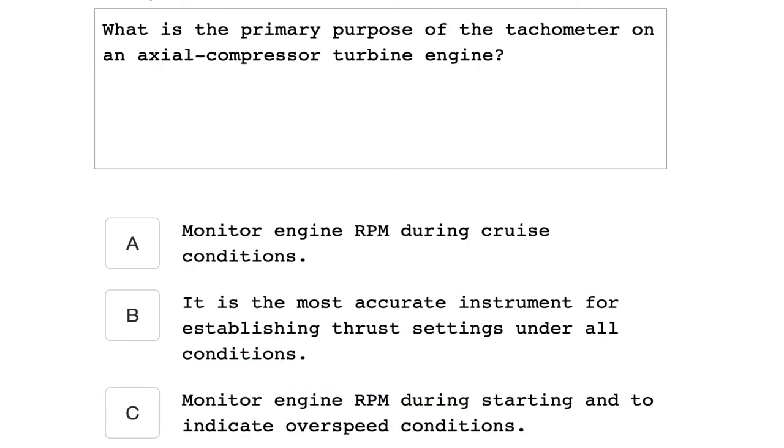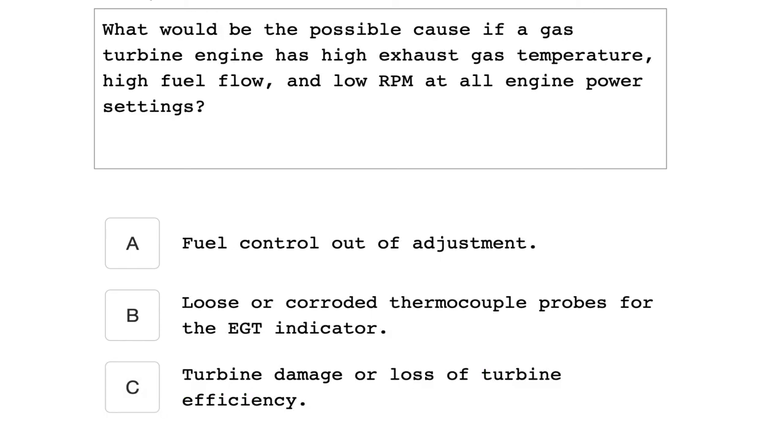What is the primary purpose of the tachometer on an axial compressor turbine engine? Monitor engine RPM during starting and to indicate overspeed conditions. What will be the possible cause if a gas turbine engine has high exhaust gas temperature, high fuel flow, and low RPM at all engine power settings? Turbine damage or loss of turbine efficiency.